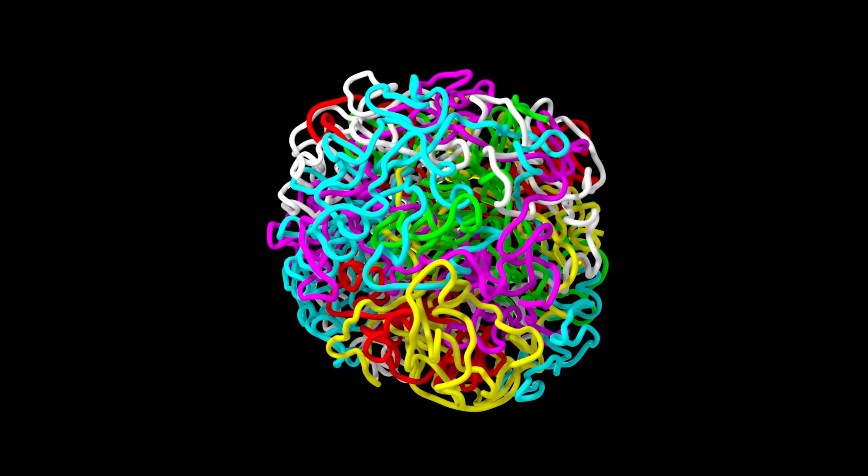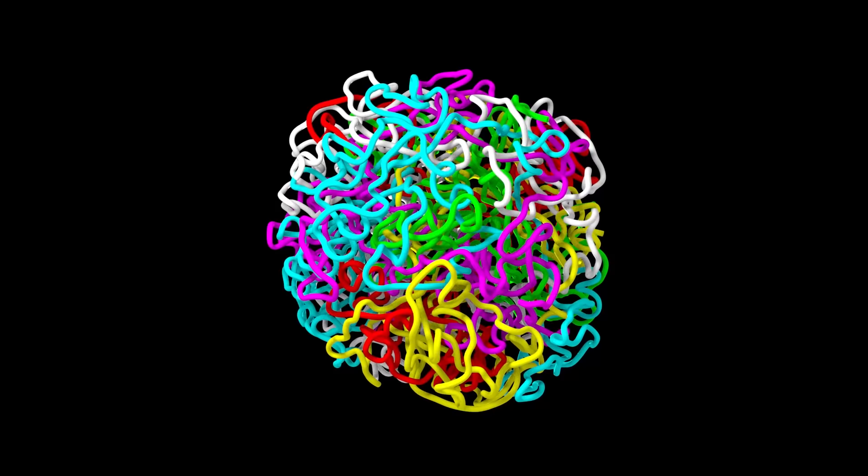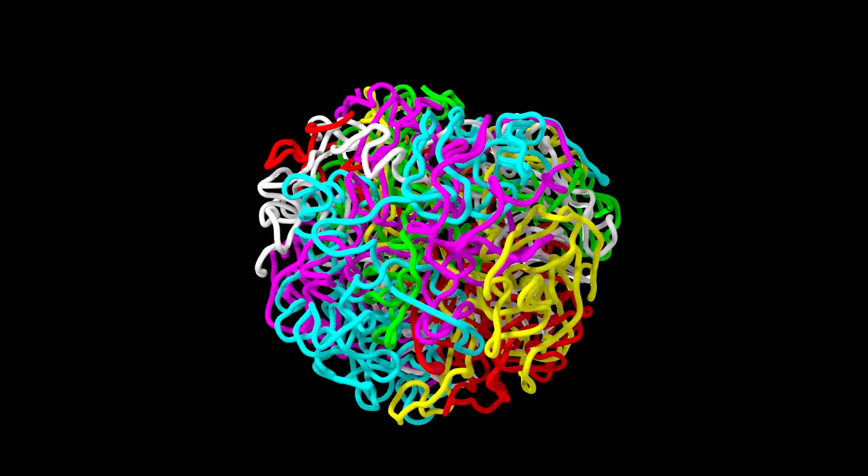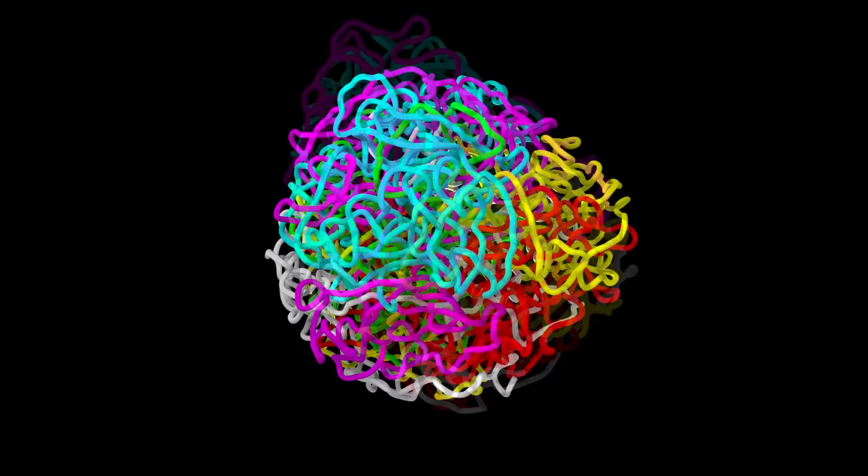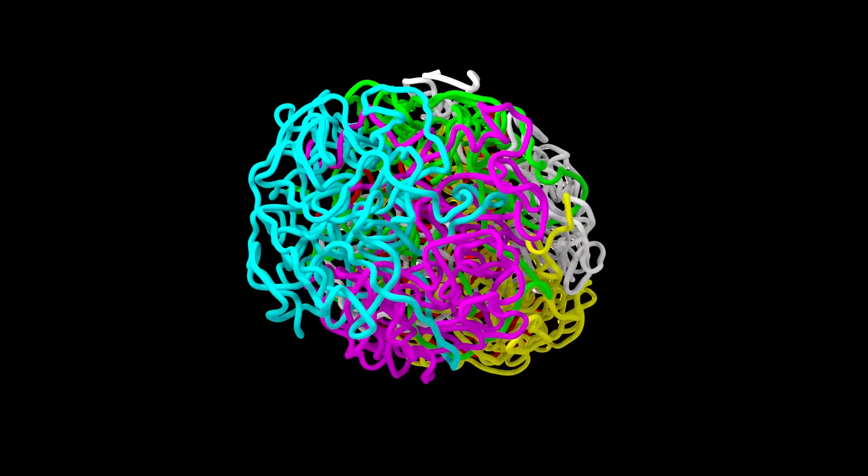Second, extrusion doesn't just lead to segregation of domains within chromosomes. A collection of chromosomes that are all jumbled up will naturally become segregated if extrusion takes place. The fact that chromosomes are segregated in this way inside the nucleus, forming chromosome territories, is well known.